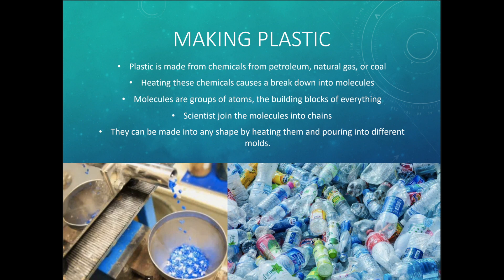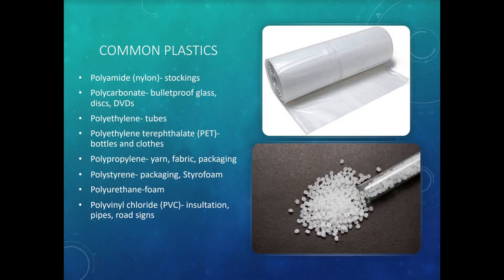They need to use heat to make plastic, and then it can be made into any shape by pouring it into different molds. The biggest thing about plastic is that the bonds between the little molecules are very, very strong — that's why plastic is so successful. There are a few different types of plastic with very strange names: polyamide is like nylon; polycarbonate is found in bulletproof glass and DVDs; polyethylene terephthalate (PET) is used in bottles and clothing; polypropylene is yarn, fabric, and packaging; polystyrene is packaging and styrofoam; polyurethane is other kinds of foam; and polyvinyl chloride is PVC.